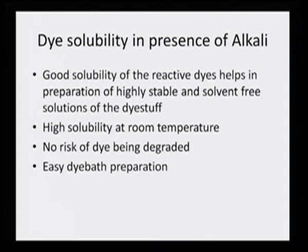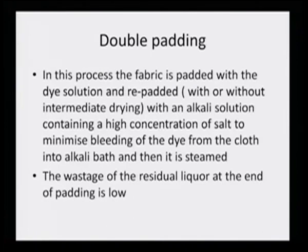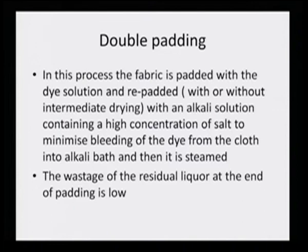In the double padding process, the fabric is padded with dye solution and re-padded with or without intermediate drying. Twice it is done — as the name suggests. It may be necessary to dry in between, or without even drying in the intermediate step, it can be re-padded with an alkali solution containing high concentration of salt to minimize bleeding of the dye from the cloth into the alkali bath, and then it is steamed. If the dye is fixed with the help of steaming, the wastage of the residual liquor at the end of padding is low, and the alkali was added at the second stage, not in the beginning, so hydrolysis is also minimized.